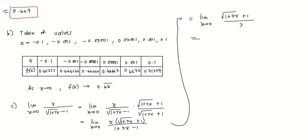And if we evaluate this as 0, we have square root of 1 plus 0 plus 1 over 3, or that's 2 over 3, which is approximately 0.66.